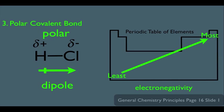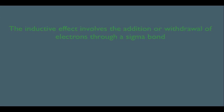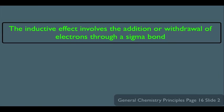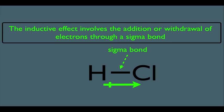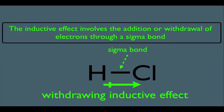What's happening here is called an inductive withdrawing effect. The inductive effect involves the addition or withdrawal of electrons through a sigma bond. In HCl, the bond between hydrogen and chlorine is a sigma bond. Since chlorine is more electronegative than hydrogen, the electrons in that sigma bond are moving towards the chlorine. We call this a withdrawing inductive effect — chlorine is withdrawing electrons from hydrogen inductively. We're going to be using this concept a lot in organic chemistry.